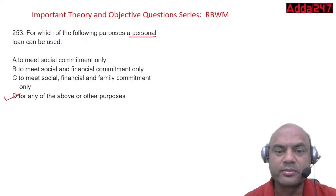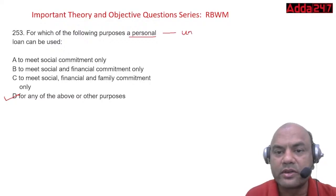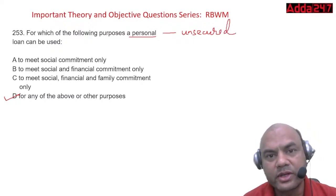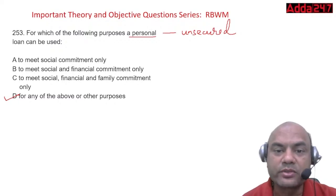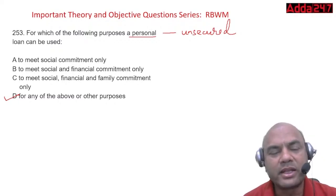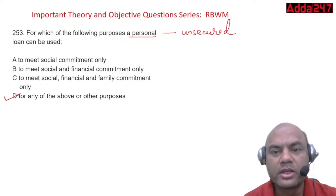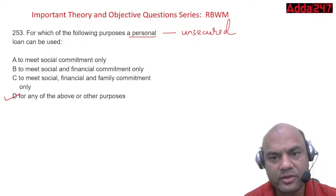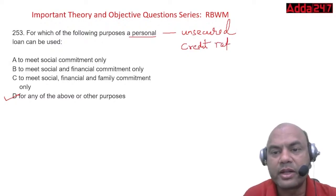Personal loan is an unsecured loan — remember this. No security is asked in a personal loan, though some banks do ask for minor collateral depending on their risk appetite. Personal loans are always given on the basis of your credit rating; many banks use CIBIL for this.